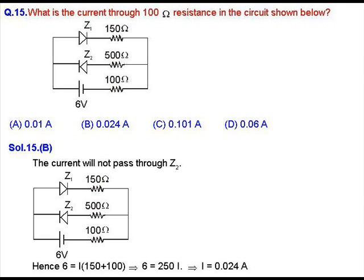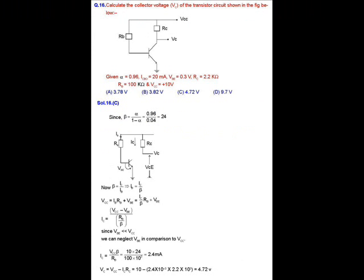250 is basically the series combination of 150 ohm and 100 ohm resistor. We can calculate I from this equation and the current I will come as 0.024 amperes, that is option B.